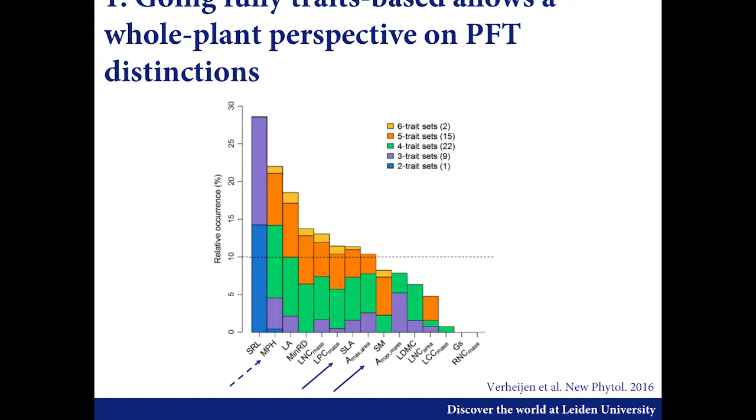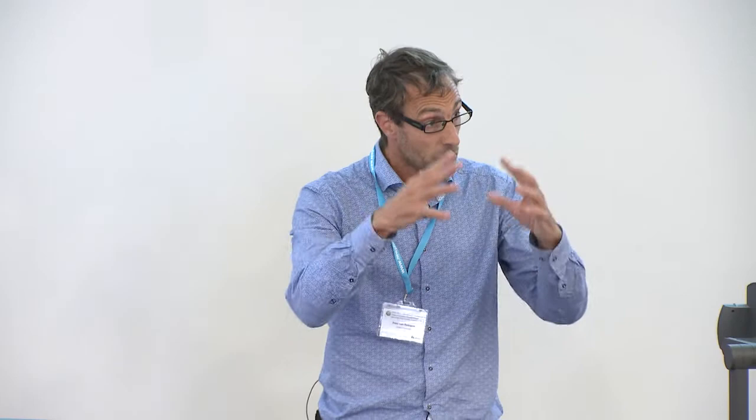To separate PFTs, we needed the root data, which is kind of obvious because specific root length is quite high for grasses versus trees. Given that PFTs are about growth form, that's what comes out. This also explains why you have height and leaf area in there, as that's your distinction between gymnosperms and angiosperms. The route traits really show up in this analysis, suggesting once more we need a whole-plant perspective to distinguish among various vegetation types.